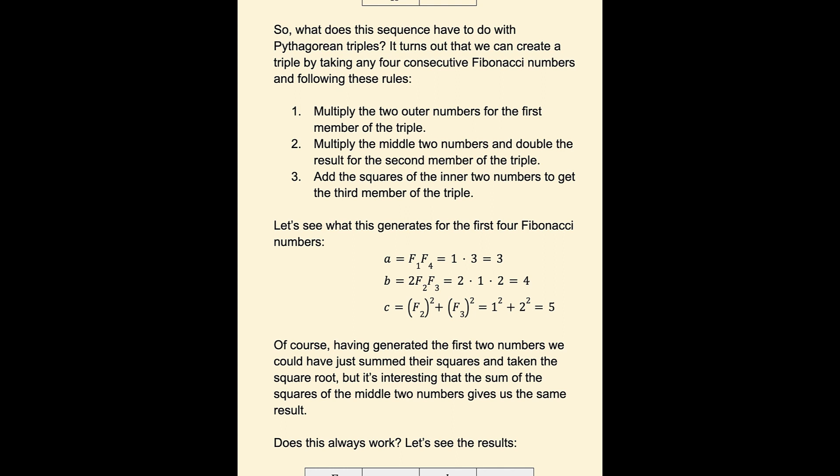So let's see what this generates for the first 4 Fibonacci numbers. Remember the first 4 are 1, 1, 2, 3. So for A, we get F1 times F4, which is 1 times 3, or 3.